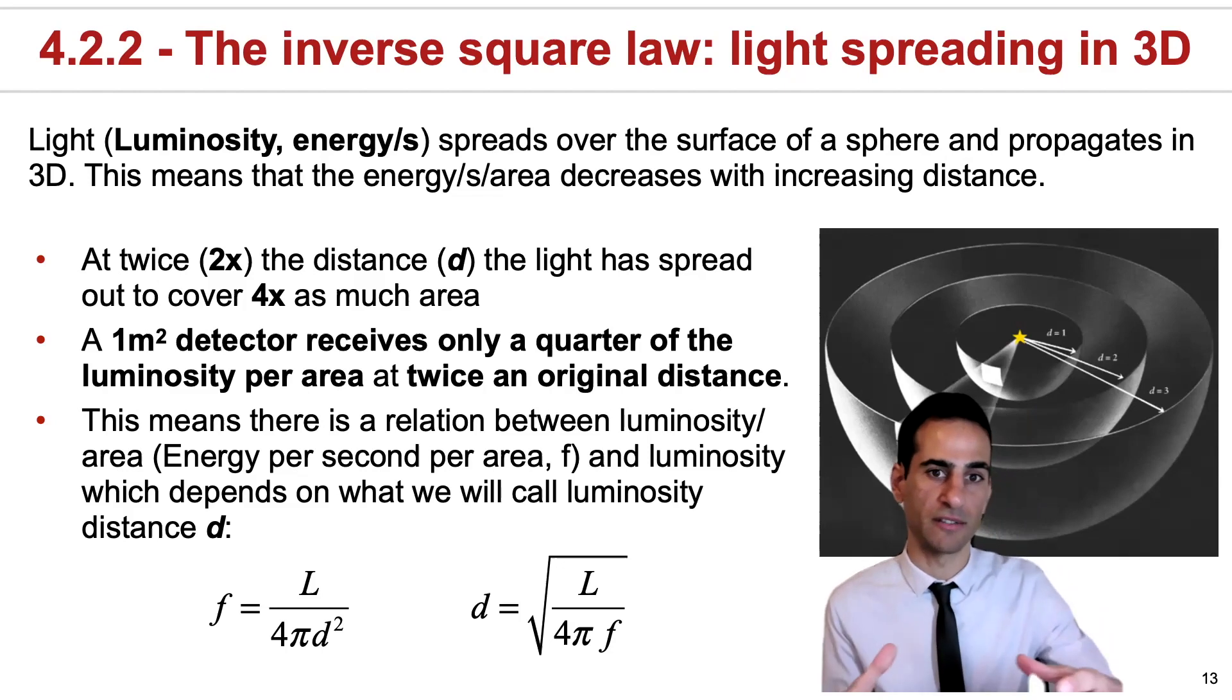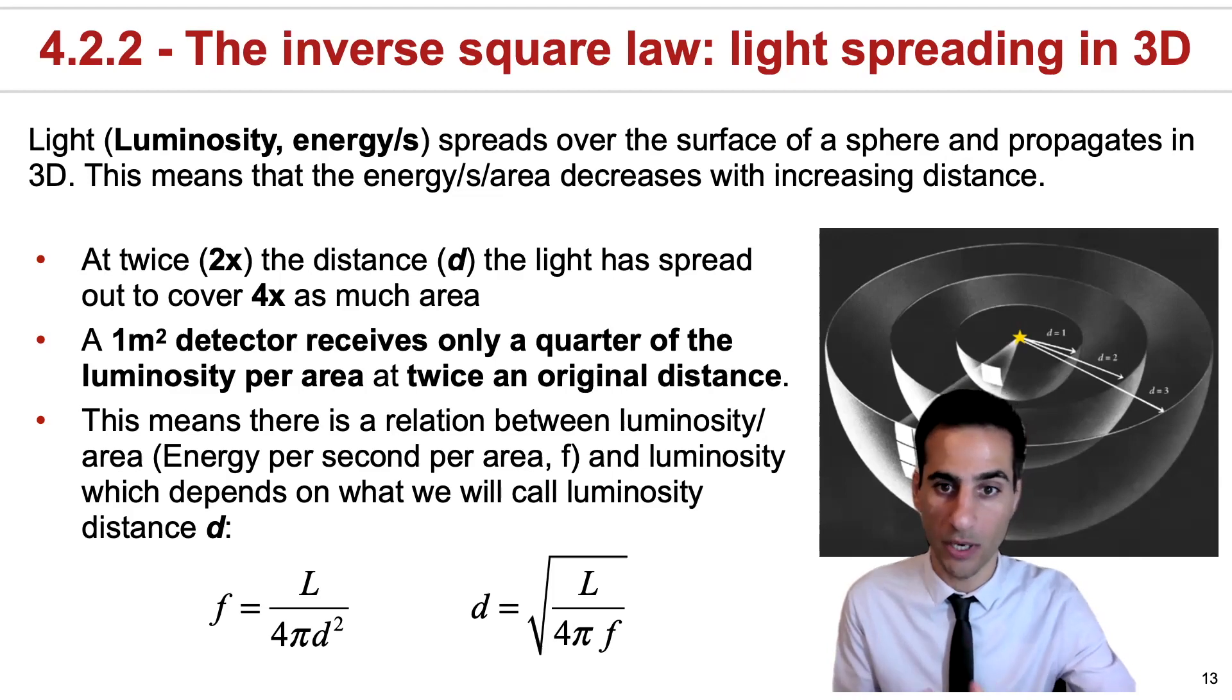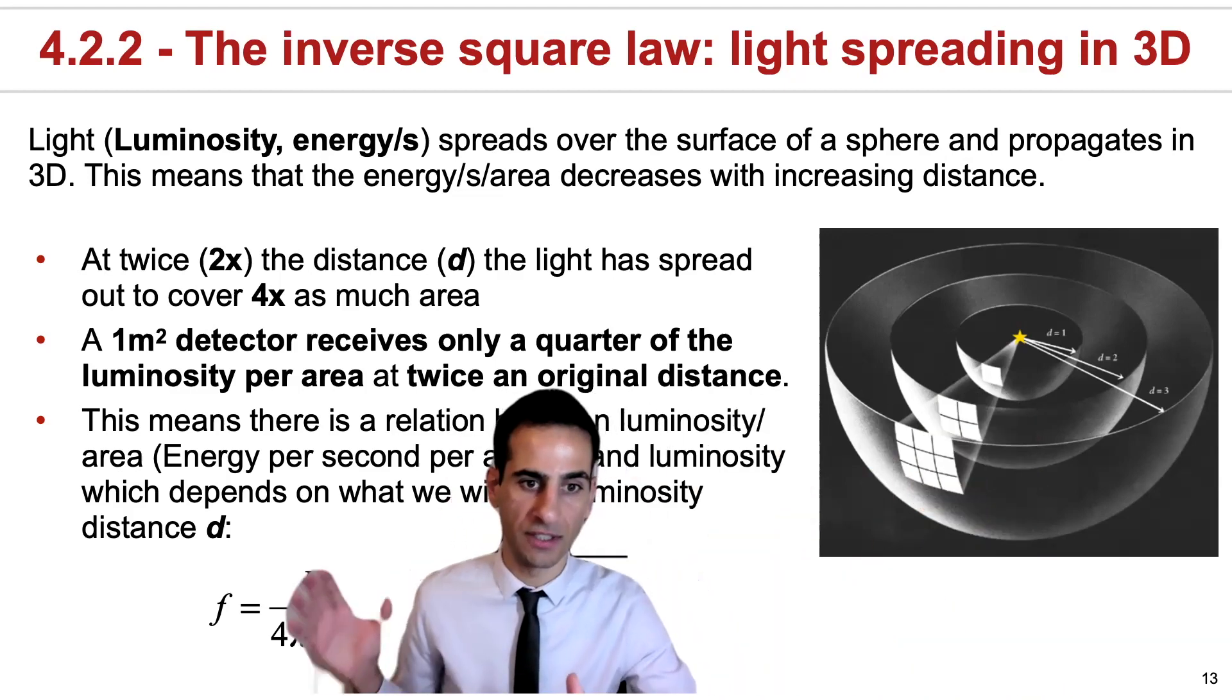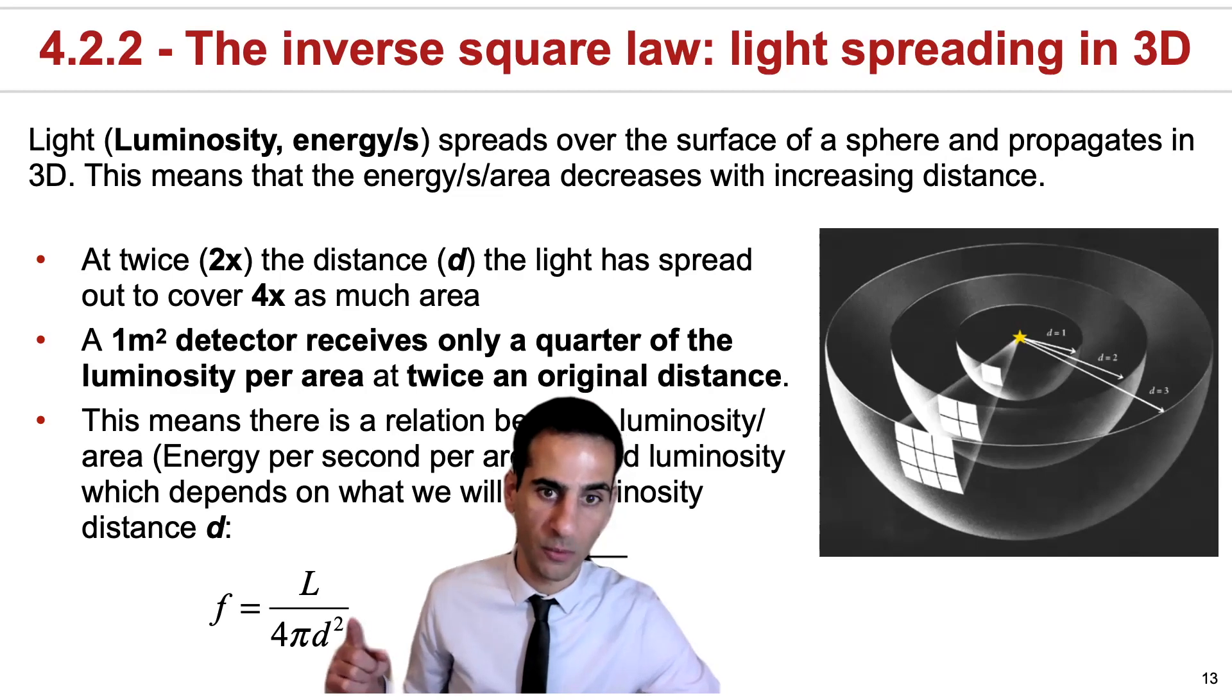So in a concrete example, if you have a one meter square detector, you're only receiving a quarter of the luminosity per area at twice the original distance. The reason for this is because the luminosity will be spreading in three dimensions with the one over d squared law.